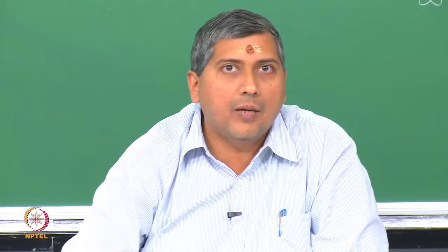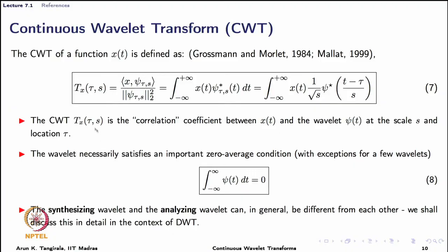The scaling s controls how wide or narrow the wavelet is; the choice of mother wave determines the basic shape, while the scaling parameter controls whether you have a wide or narrow window. The translation parameter determines what portion of the signal is analyzed. The wavelet necessarily satisfies the zero-average condition. There are exceptions: Morlet and Mexican hat wavelets have integrals that are not exactly zero but nearly zero, and for such cases perfect signal recovery is not possible — this will be demonstrated in the next lecture with MATLAB examples.